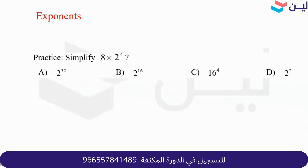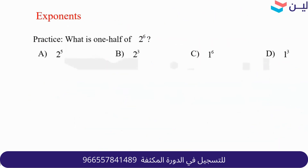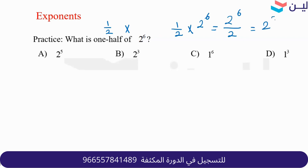Next: what's half of 2 to the sixth? 'Half of' means multiply by one-half, so this becomes one-half times 2 to the sixth, which equals 2 to the sixth over 2. Applying the division rule: 2 to the fifth is the answer. Review the rules on page 18 for exponents.